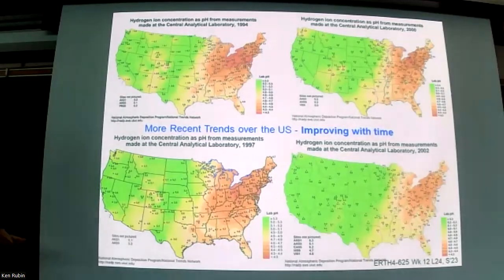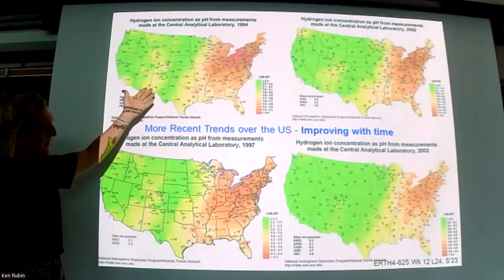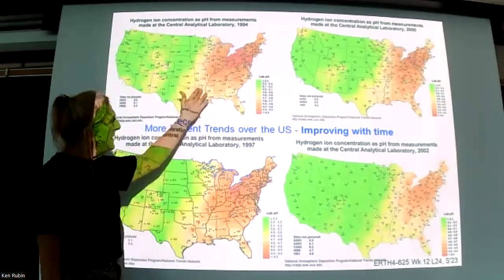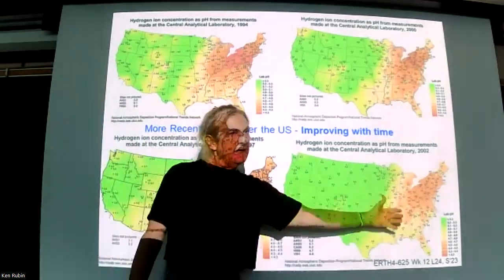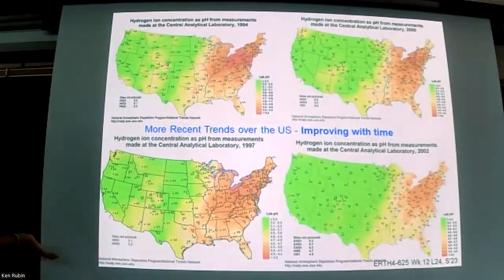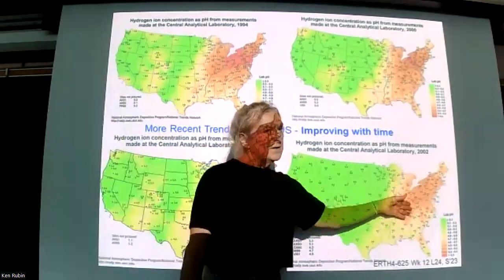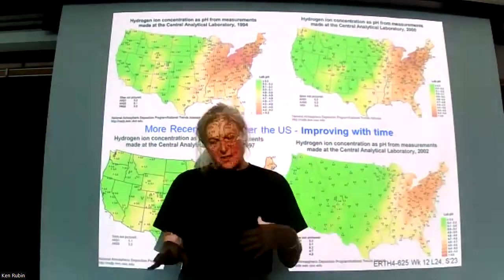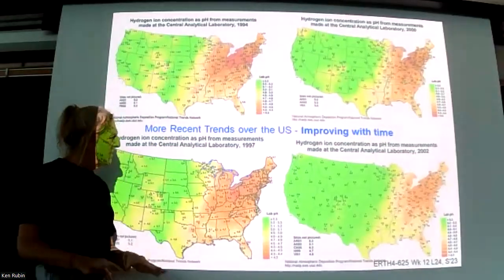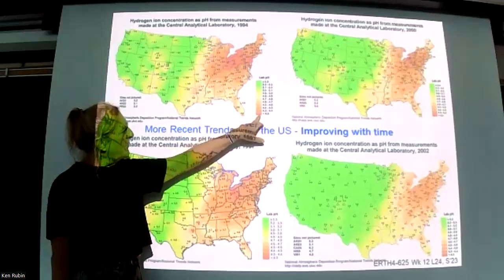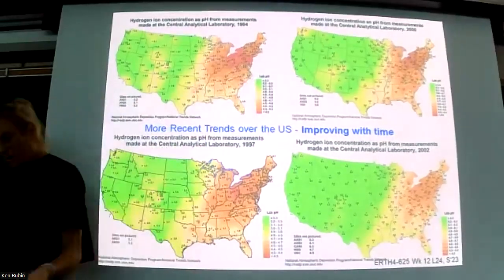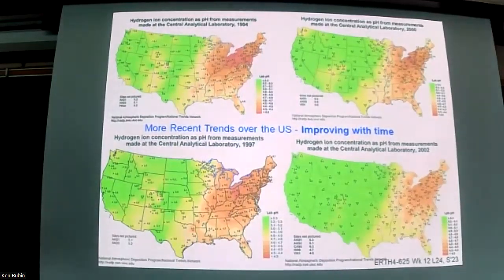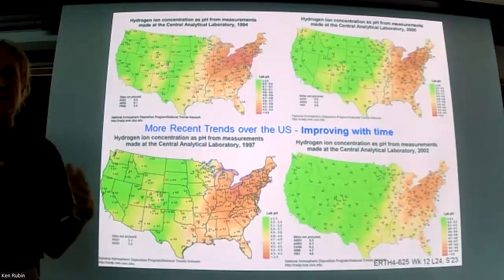US rain pH maps show that going from the mid-1990s to the early 2000s, the pH has become less acidic in the Northeast. It's still acidic — pH 4.7, 4.6, 4.8 is common — but the very low pHs of 4.3 and below are now fairly restricted, whereas previously a large orange-colored area below 4.3 covered all of New York, most of Pennsylvania, all of Ohio. It's gotten better through conscious effort.